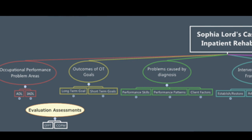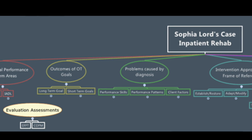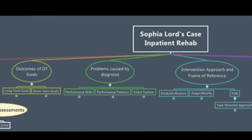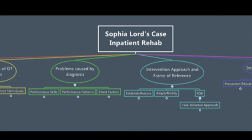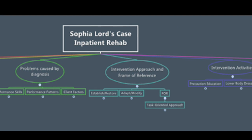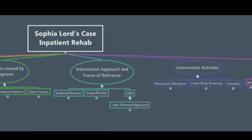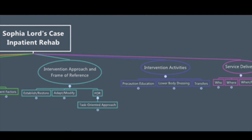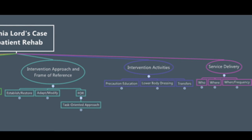We will now transition into Sophia's care during her time in inpatient rehab. We will look at her occupational performance areas of concern, long-term and short-term goals, problems caused by her diagnosis, intervention approaches and frame of reference, applicable evaluation assessments, intervention activities, and service delivery applicable to this stage of her care.